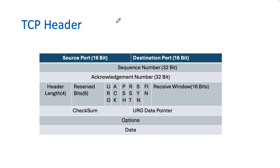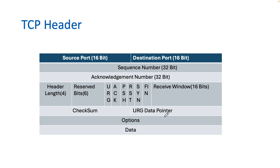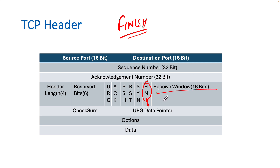SYN means synchronize — when a sync message is sent, this flag is set to 1. FIN means finish — when either party is done with data transfer and wants to close the connection, it sets this flag to 1. The receiving window size field is 16 bits and is filled by the receiver, specifying its capacity for handling incoming data. This is part of TCP windowing and ensures no excessive traffic is sent.